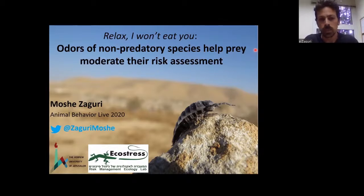Okay, thank you. As Alexis said, my name is Moshe Zagouri and I'm from the Risk Management Ecology Lab at the Hebrew University. Today I'm going to speak about how safety cues, or specifically odors of non-predatory species, might help the prey to moderate the risk assessment. I want to first start with an example. Imagine now you're not sitting in front of a computer, but rather walking near a swamp at night, and suddenly the croaking frogs go quiet.